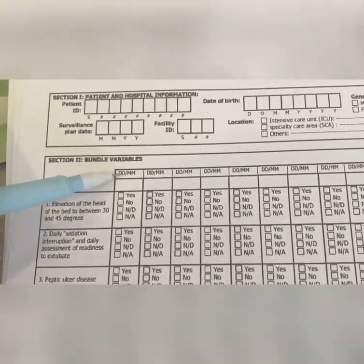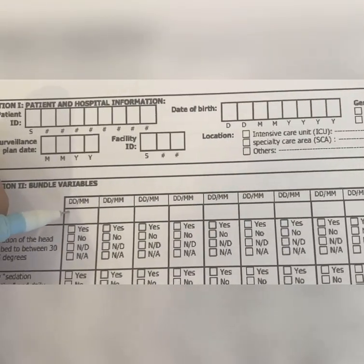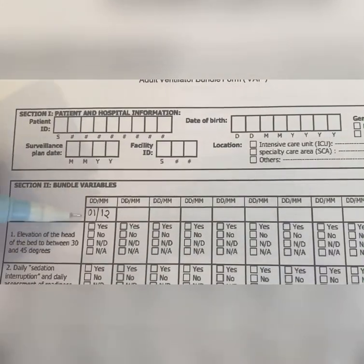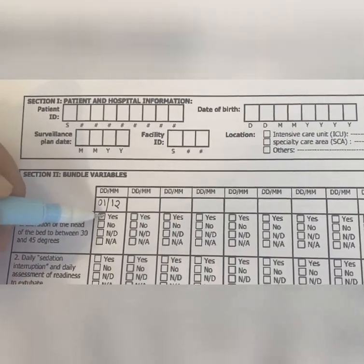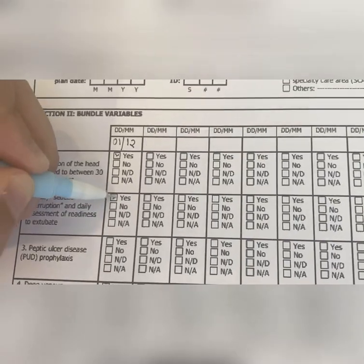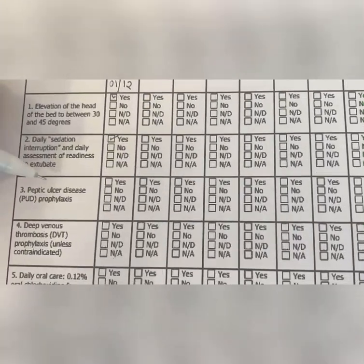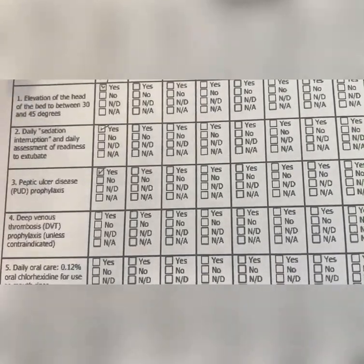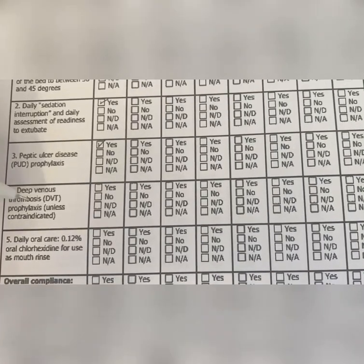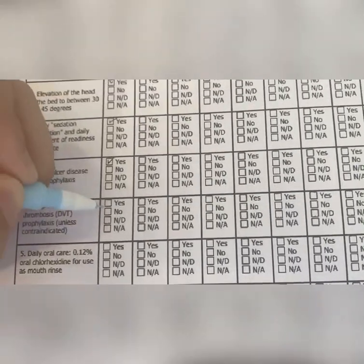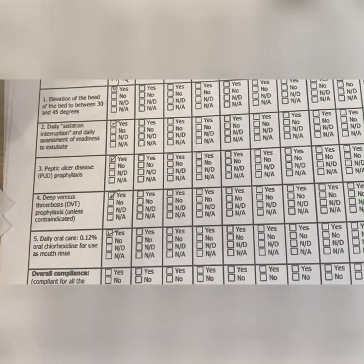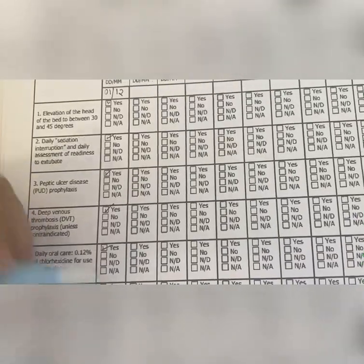Write the date and month — for example, 01/12. Did you elevate the head of the bed? Tick yes. Did you do daily sedation? Yes. Peptic ulcer disease prophylaxis — did you give it? Yes. DVT prophylaxis, unless contraindicated — yes. Daily oral care — yes. And if all of these are yes, you can tick overall compliance. This should be done daily.